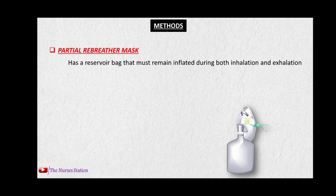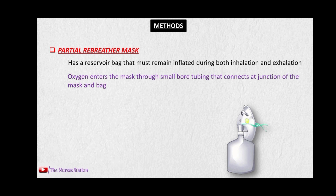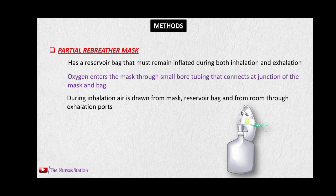The next method is the partial rebreather mask. It has a reservoir bag attached to the body of the mask, and the reservoir bag must remain inflated during both inhalation and exhalation. Oxygen enters the mask through small bore tubing connecting the mask and the reservoir bag. During inhalation, air is drawn from the mask, the reservoir bag, and from room air through the exhalation ports. On exhalation, one third of the exhaled air passes into the bag — this is mostly dead space air containing a high concentration of oxygen — and the remaining two thirds passes out through the exhalation ports.